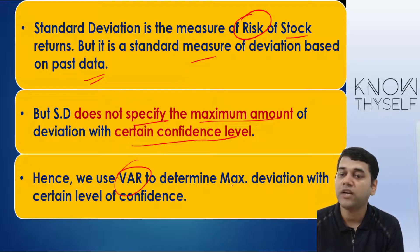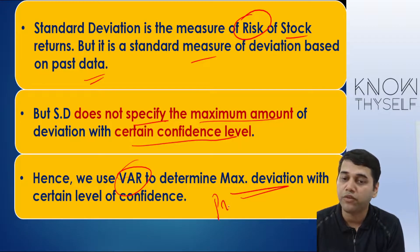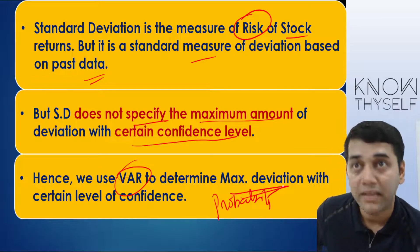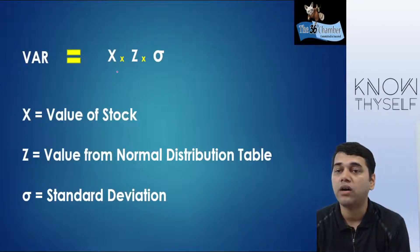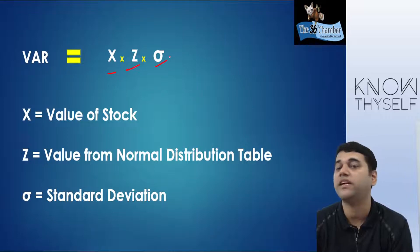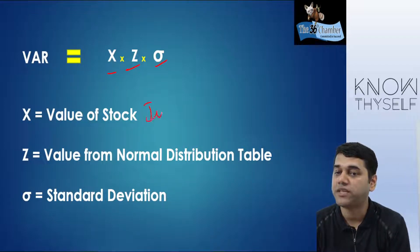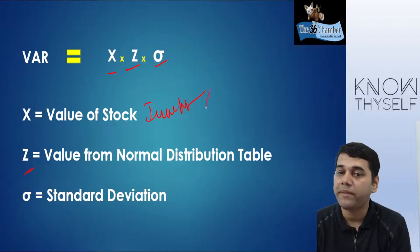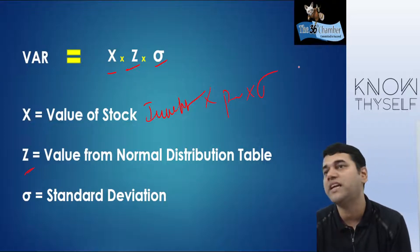Hence, we are going to use VAR to determine the maximum deviation with a certain level of confidence — that means we are going to find out the probability of how much we might lose. VAR is found out with one formula: X times Z times sigma (standard deviation). X is the investment value, Z is the probability value from the normal distribution table, and sigma is the standard deviation.